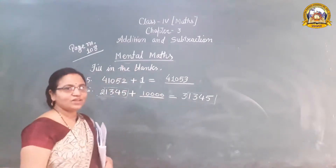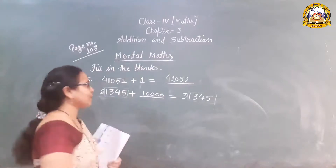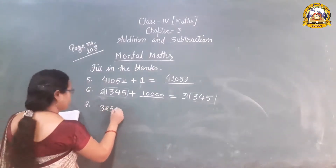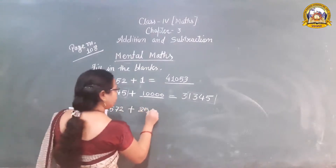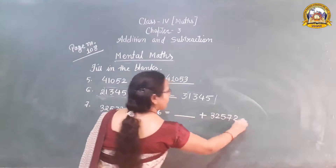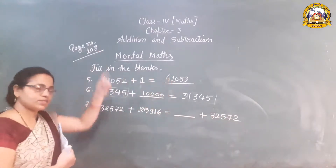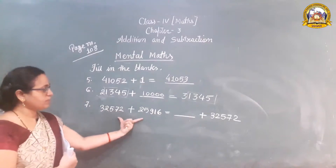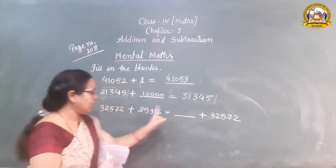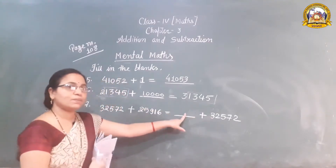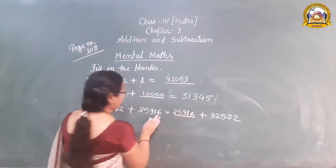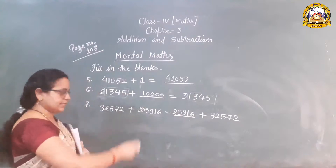This is mental maths, so you should try to solve all questions mentally. Question number 7: 32572 plus 25916 equals dash plus 32572. Just like the previous question — two numbers on this side, one number missing on the other side. This number is present on both sides; the missing number is 25916. We fill it in and both sides are balanced.